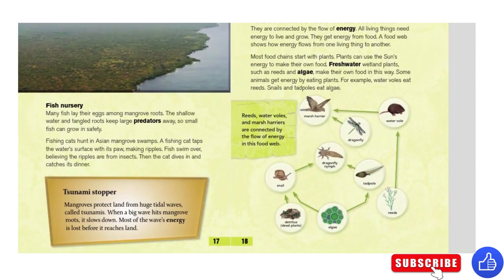Fish nursery. Many fish lay their eggs among mangrove roots. The shallow water and entangled roots keep large predators away, so small fish can grow in safety. Fishing cats hunt in Asian mangrove swamps. A fishing cat taps the water surface with its paws, making ripples. Fish swim over, believing the ripples are from insects. Then the cat dives in and catches its dinner.